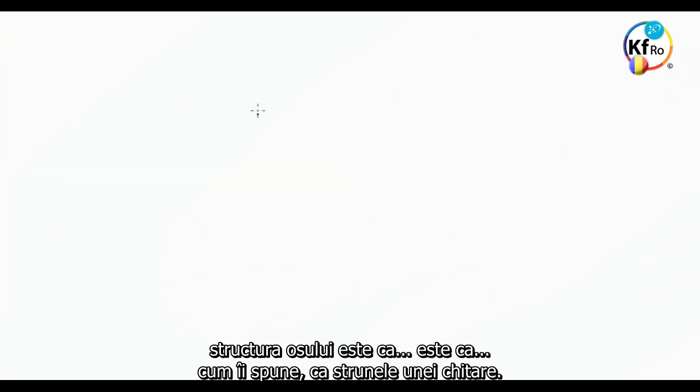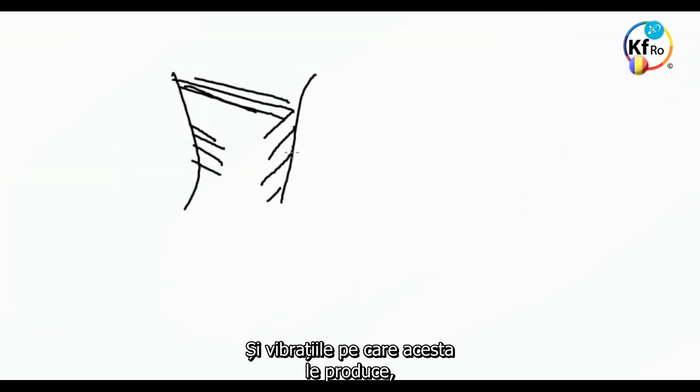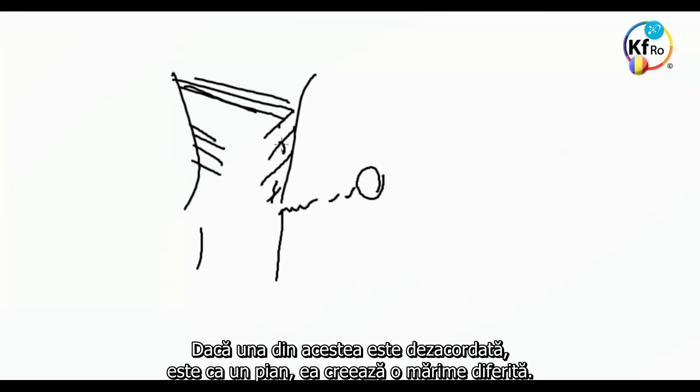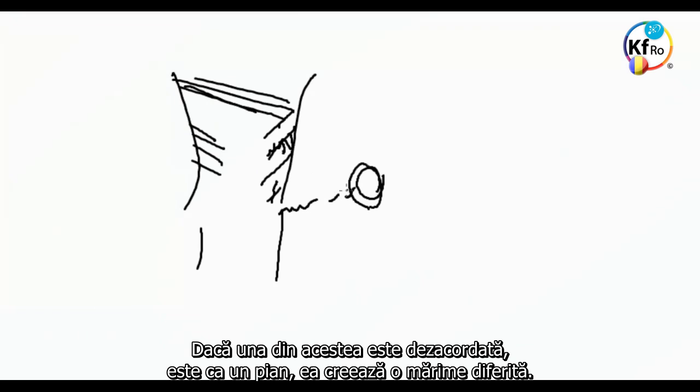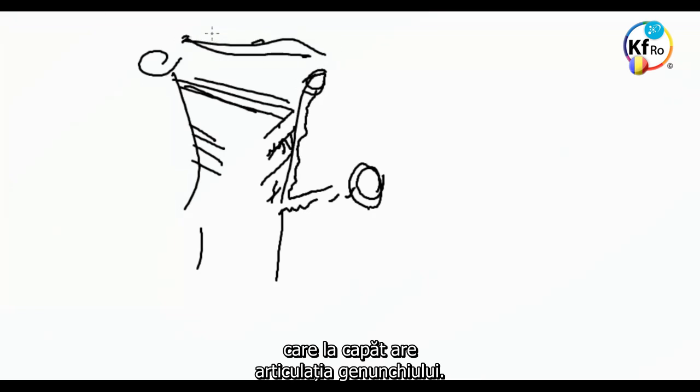Your bone structure is like a guitar string. And the vibration which these produce, creates a Plasmatic Gravitational Field, which attracts the lymph into the bone. If one of these is out of tune, it's like a piano, it creates a different size. When it comes to the bone, it cannot go, so it slips up, to the centers, which at the end is your joint, your knee.